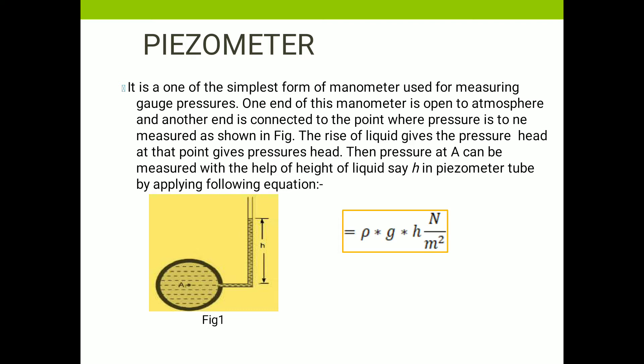Pressure at point A can be measured with the help of the height of the liquid, denoted as small h, in the piezometer. By applying the following equation, we can calculate the pressure: P = ρgh, where ρ is the density of the liquid, g is the acceleration due to gravity, and h is the height of the liquid. The answer is in Newton per meter square.